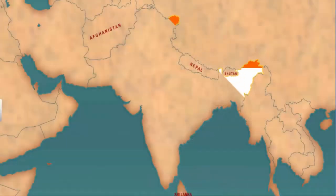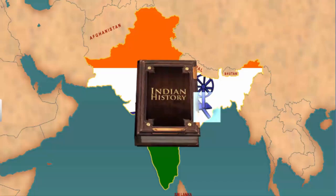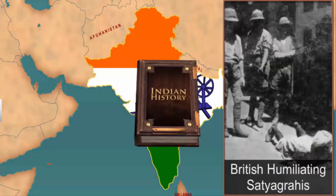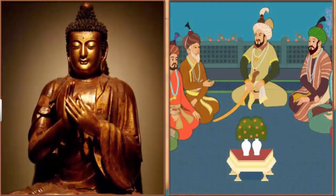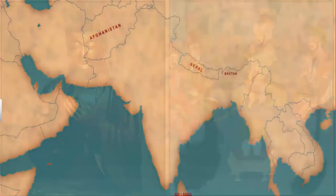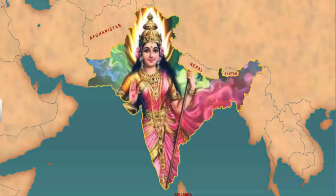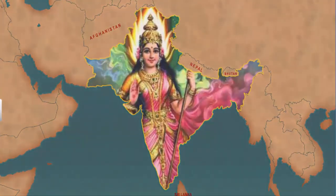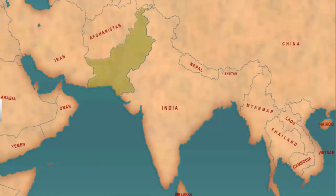The growth of nationalism also happened through the process of reinterpretation of history. The British considered India as a land of backward people incapable of governance. In response, the Indians began exploring glories from their past and wrote about the ancient times when India was much developed. However, the glories of the past and the symbols used by nationalists, such as Bharat Mata, were all very Hindu in nature. Consequently, people of other religions and communities felt alienated. Although Indians got inspired to fight for independence, at the same time, their religious differences prepared ground for the division of the country.